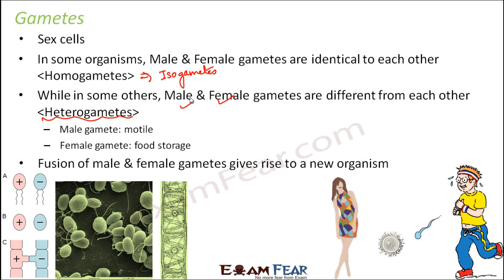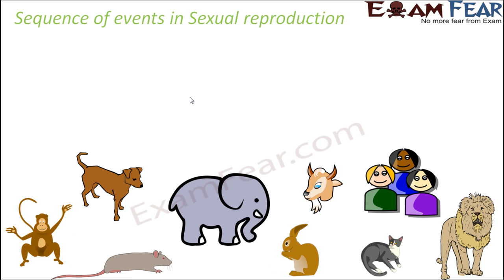In the later part of this lesson, we will see how gametes are produced in different organisms — both plants and animals. When we talk about sexual reproduction, the reproductive organs involved vary from one organism to another. The reproductive organs in human beings are not the same as those in an elephant, so it is difficult to cover every animal specifically. In general, we will discuss the important steps of sexual reproduction and what happens in each step.